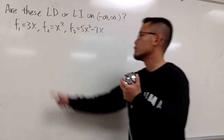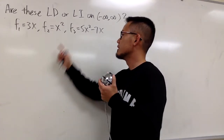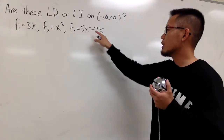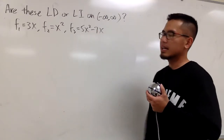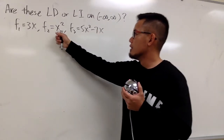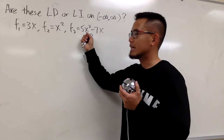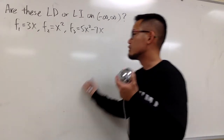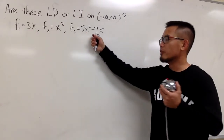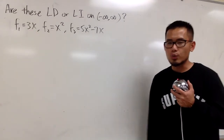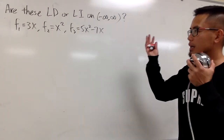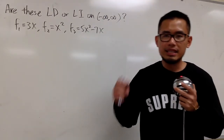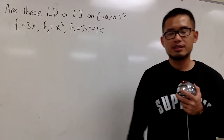So we have 3x, x squared, and 5x squared minus 7x. As you can see, the x squared term matches, and 3x is just a constant multiple of the negative 7x term as well. So I totally suspect this is linearly dependent.